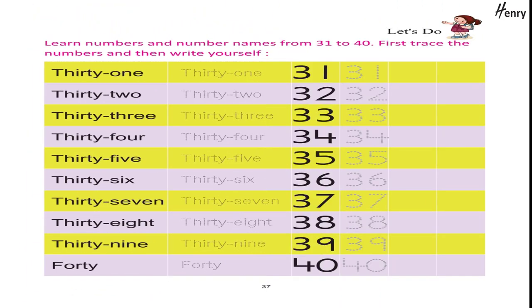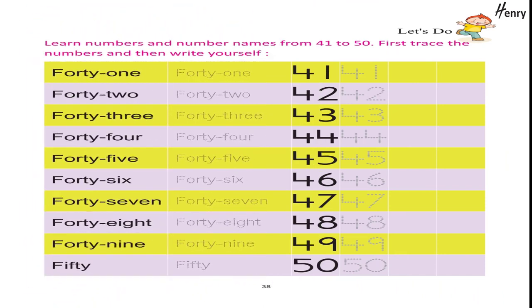Learn numbers and number names from 31 to 40. First trace the numbers and then write yourself: 31, 32, 33, 34, 35, 36, 37, 38, 39, 40. Let's do.